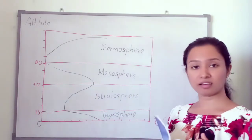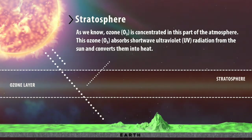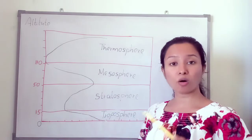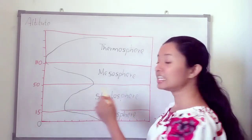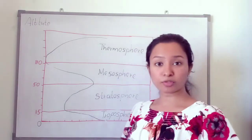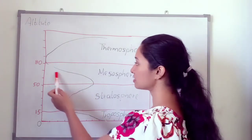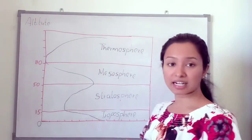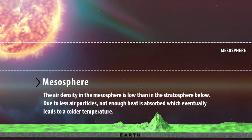In the stratosphere, the ozone layer is present. This ozone layer absorbs ultraviolet (UV) rays from sunlight. Because of that, temperature increases in the stratosphere. In the mesosphere, temperature decreases when altitude increases because there is a very small amount of ozone gas to absorb UV rays from the sun.